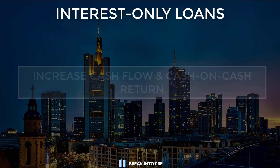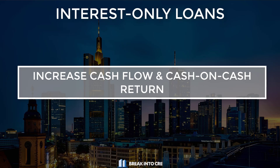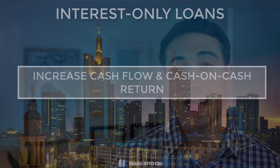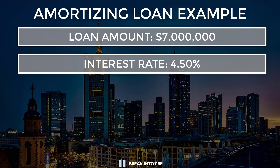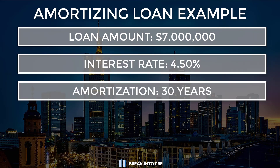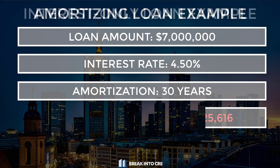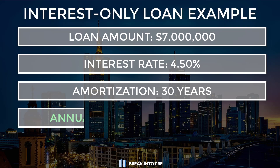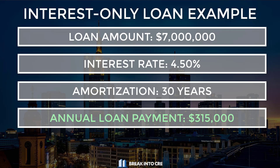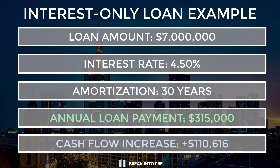The first and probably the most obvious is that an interest only loan is going to increase your cash flow and your cash on cash return. It's pretty clear that your cash flow is going to increase if you don't have to pay principal payments for that month. For example, on a $7 million loan at a 4.5% interest rate amortized over 30 years, you would pay $425,616 per year in total loan payments. But in that same scenario, if you assume the loan payments were interest only, you would pay only $315,000 per year, which would produce an additional $110,616 in cash flow during your interest only period.